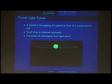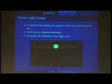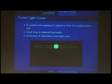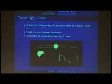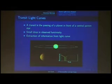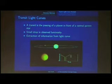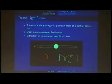So let's talk about detection. A transit is when a planet crosses in front of a central star — it's sort of like a mini-eclipse in that there's a small drop in luminosity. In the light curve, we can see this small dip in the observed flux. How can we extract information on the planet and the star just through this observed change in luminosity?